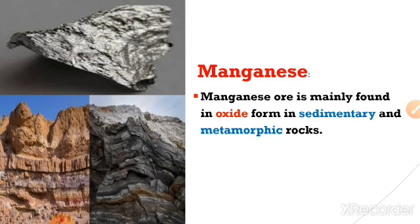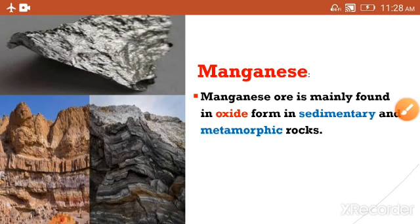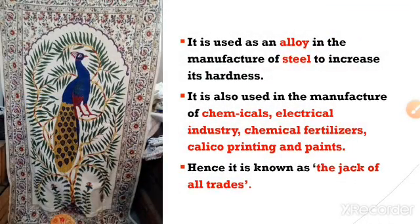Now let us study the second major mineral resource of Karnataka: manganese. Manganese ore is found in oxide form in sedimentary and metamorphic rocks. You can see the picture of manganese here. Manganese is found under two types of rocks — sedimentary and metamorphic rocks — in the form of oxide. It is used as an alloy in the manufacturing of steel to increase its hardness.